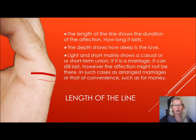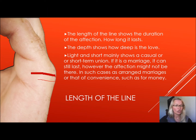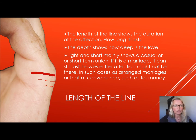The light and short line mainly shows a casual or short-term union. However, that affection might not be there — in such cases as arranged marriages or marriages of convenience, such as someone who marries for money. So it can still be a marriage that lasts for a long time, maybe 28 to 30 years, but the affection might have run out.